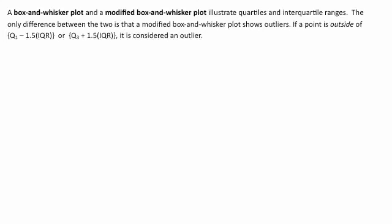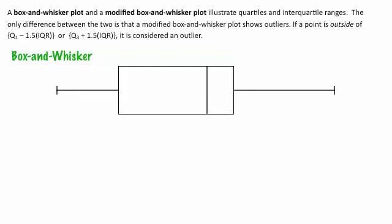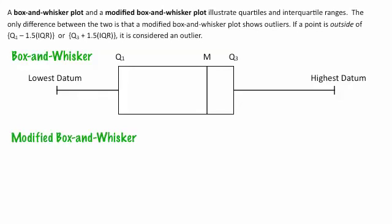A box and whisker plot has a box bounded by Q1, Q2, and Q3. Q2 is indicated as the median M. The whiskers extend to the lowest data point and the highest data point. In a real data set, we would have numbers representing Q1, Q3, and the median. A modified box and whisker plot is exactly the same thing, except it also shows outliers.